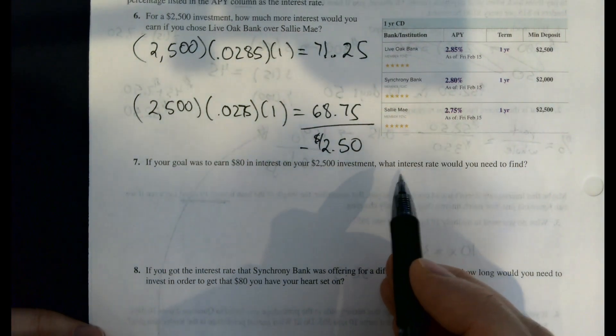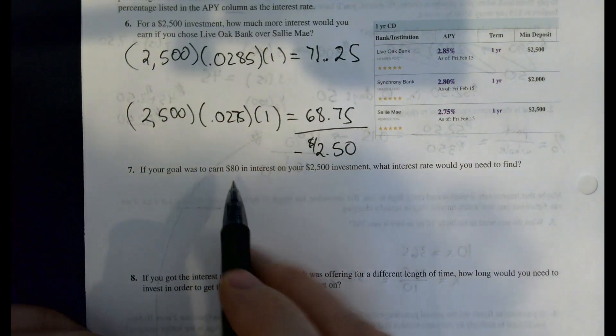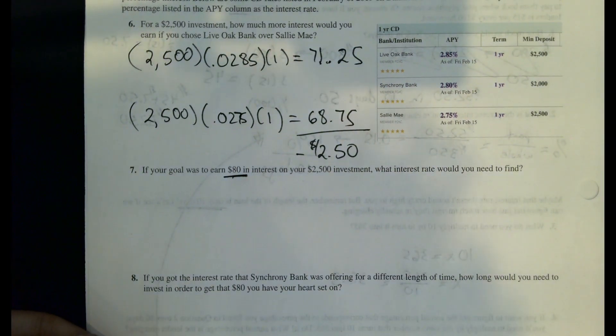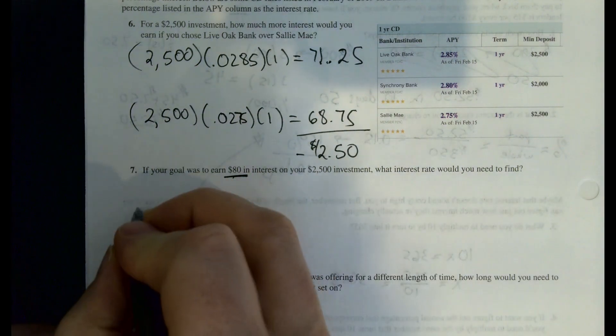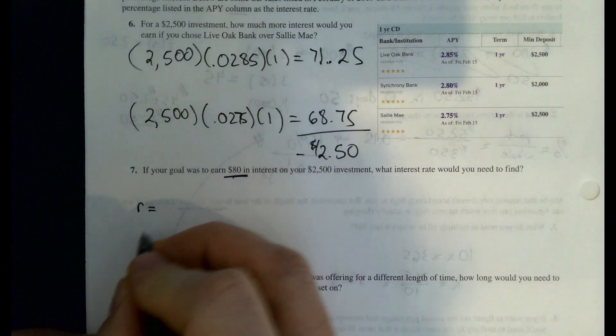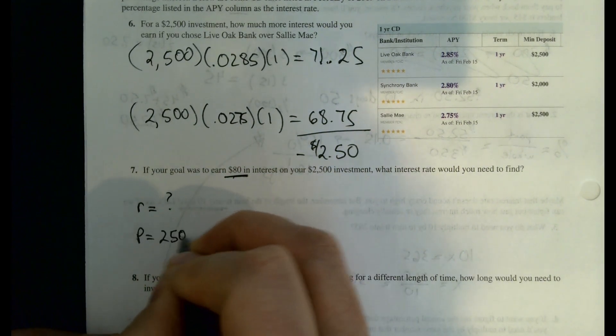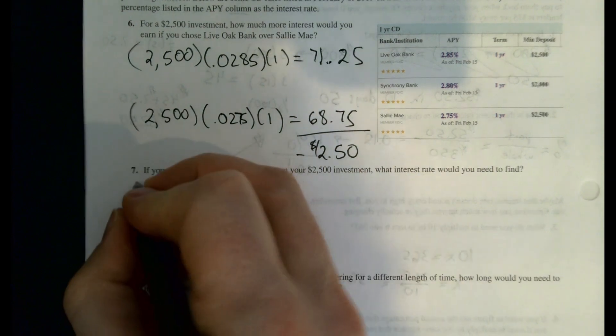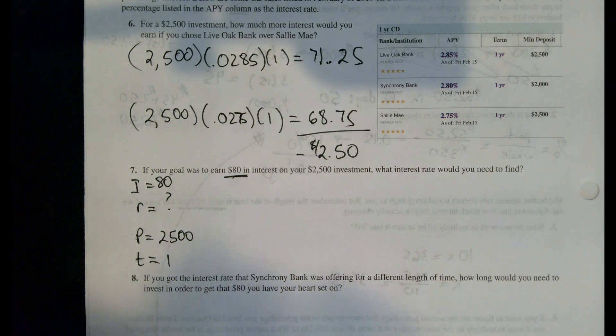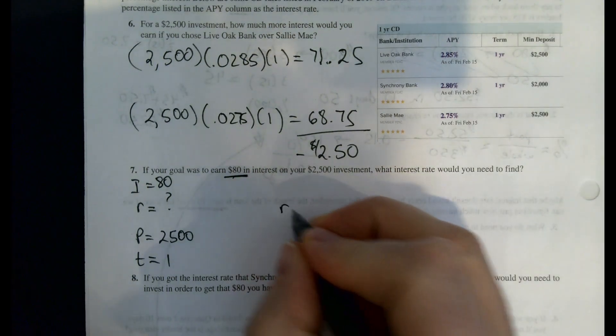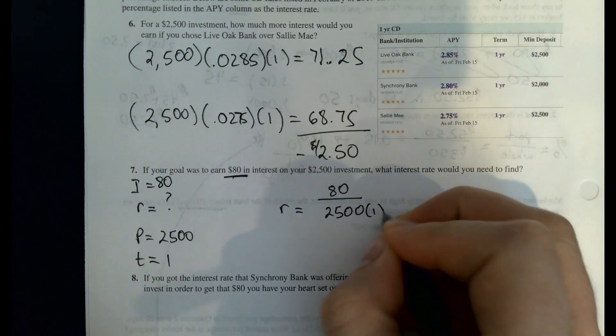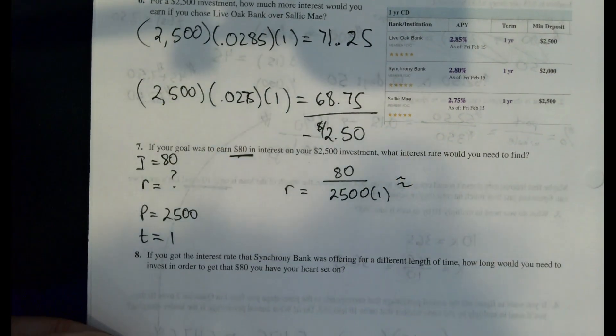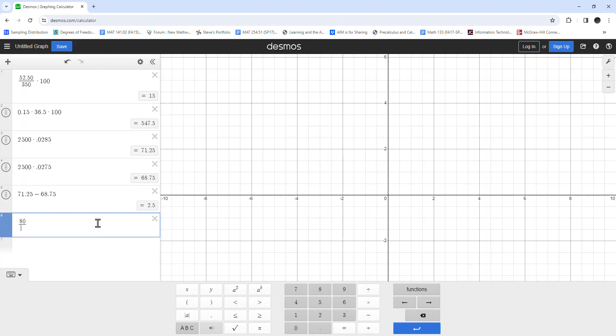This next one is a good question because it requires us to calculate an interest rate. If we wanted to earn $80 in a one-year time frame on our $2,500 investment or principle, what interest rate would we want? In other words, we're looking for an R where our P is $2,500 and our T is 1 and our I is $80. Recall that R is equal to the interest divided by the principal times the time.